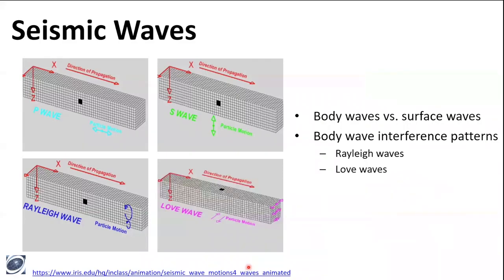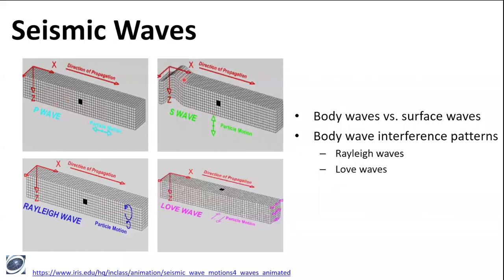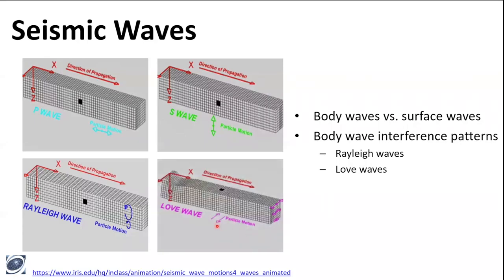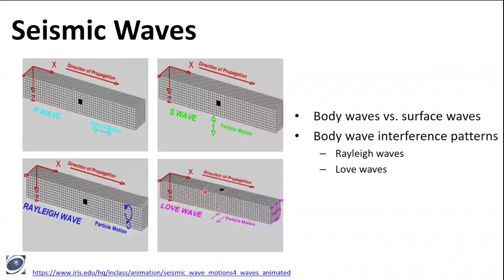All VS30 measurements are made using seismic methods. Let me do a quick review of seismic waves. Seismic waves can be broken up into body waves — P waves and S waves. P waves have particle motion in the direction of propagation; S waves have particle motion perpendicular to the direction of propagation. Then we also have surface waves, such as Rayleigh waves and Love waves. Surface waves propagate parallel to the surface and are caused by body wave interference patterns. Most surface seismic methods for measuring VS30 use Rayleigh waves.